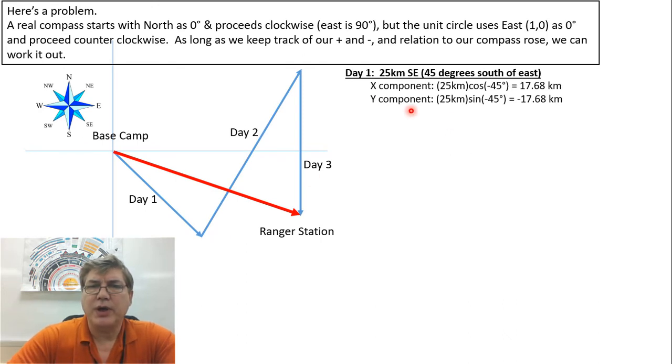So day one, we can get the components. The x component is 25 kilometers times the cosine of minus 45 degrees. I counted this from the east line down to here as 45 degrees south of east, so I said minus 45 degrees. That gives us 17.68 kilometers in the x direction. And you can look at your x and y and say, is this positive in the x direction? Yes, it is, and we've got a positive number.